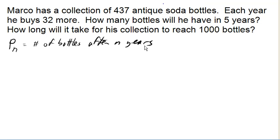The subscript lets us keep track of which year we're talking about. So P₀ would be how many bottles he has after zero years, or in other words, right now. He has 437 bottles right now, and so P₀ is 437.